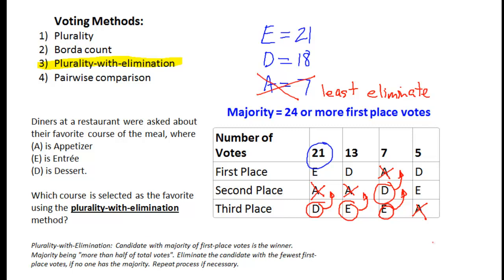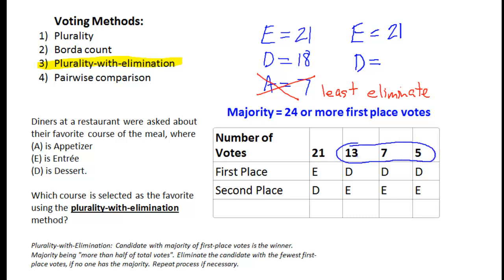Let me revamp this table here a little bit. Now that we're only comparing these two candidates of entree and dessert, we can now retotal these up. You can see that the entrees are still at 21 first place votes, but because we eliminated the appetizers, the dessert is now 13 plus 7 plus 5. The dessert now is at a total of 25 first place votes. And since we hit that magic number of 24 or more, the dessert is the clear winner. The dessert is the clear winner with the plurality with elimination method.